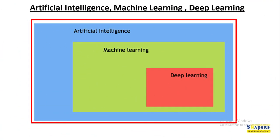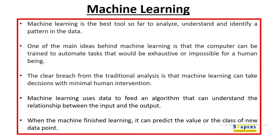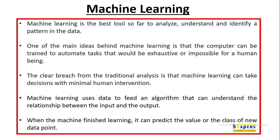This slide shows the hierarchy of the various technologies currently under hot discussion. Artificial intelligence is the broadest concept. Machine learning is a subset of artificial intelligence, and deep learning is a subset of machine learning. The subsequent slides will discuss what machine learning and deep learning are about, including the internals of machine learning.